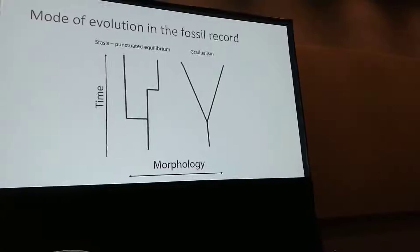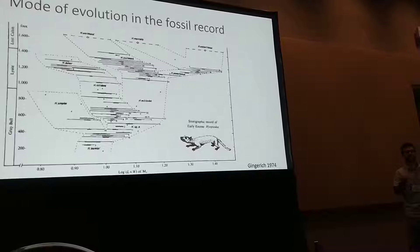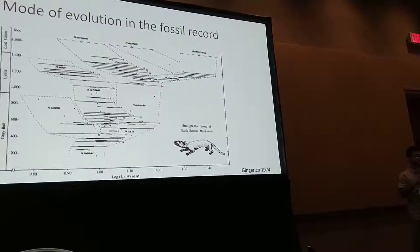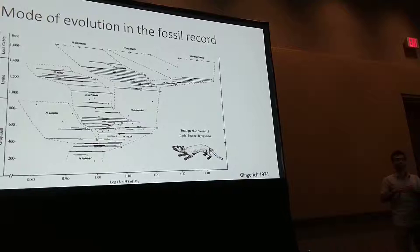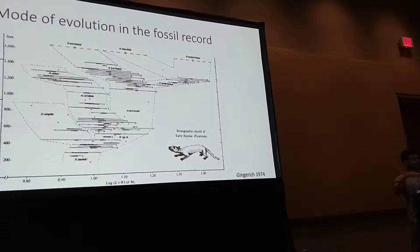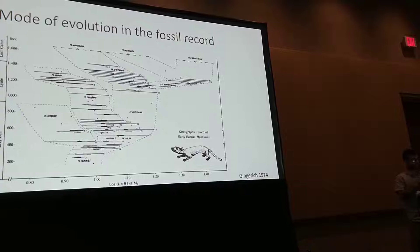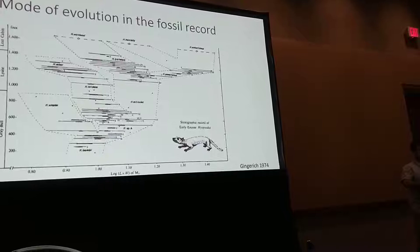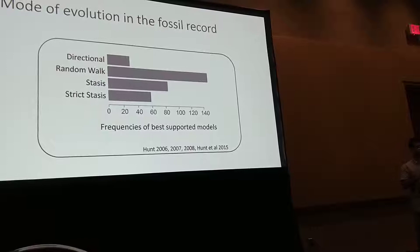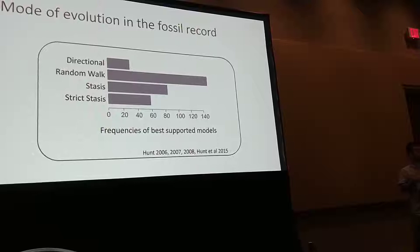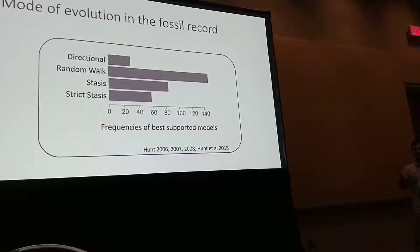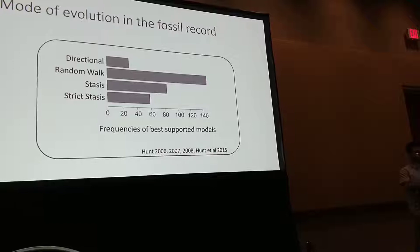Those are two different modes of anagenetic change. A lot of the debate settled when Jim Hunt came up with a model framework to compare different modes of evolution — explicit statistical methods to compare data in which you have a population of fossils represented by horizontal lines representing time series. When he compared many time series for multiple organisms and traits, he found support for some traits evolving under gradual directional selection, many traits evolving under random walk, and many others under stasis.